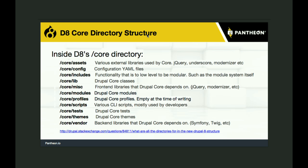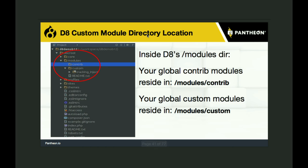Inside the core directory — this is just here for reference. Once you get inside the modules directory, I suggest making subdirectories called contrib and custom. Some modules actually look for this. All the contrib modules you download go in the contrib directory, and all your custom modules for your site go in the custom directory. This way there's no doubt whether you're looking at a contrib module or something you built.